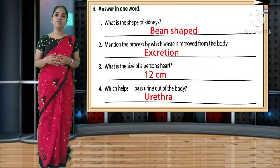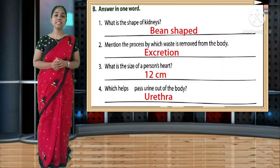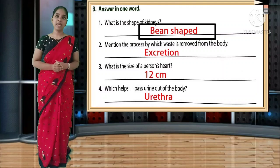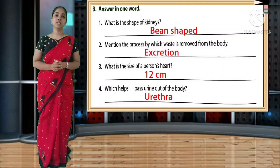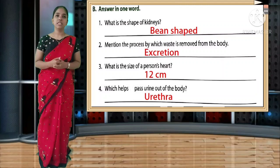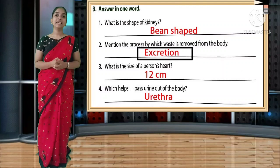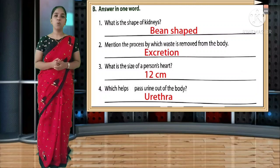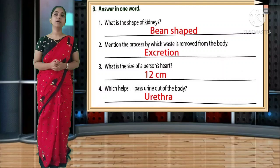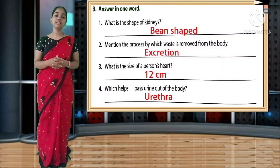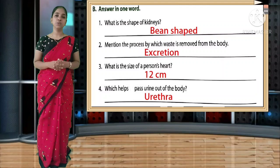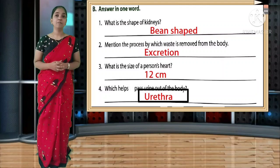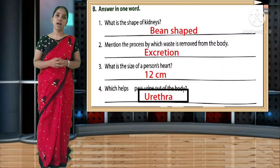One-word answers for excretory system. First: what is the shape of kidneys? It is bean-shaped. Second: the process by which waste is removed from the body is called excretion. Spelling: E-X-C-R-E-T-I-O-N. Third: what is the size of a person's heart? It is 12 cm. Fourth: which organ helps pass urine out of the body? It is the urethra. Spelling: U-R-E-T-H-R-A.